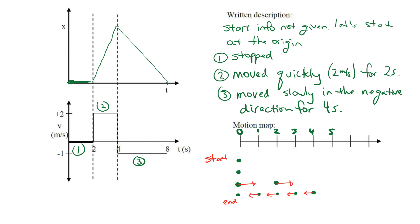Here's what I get. Starting at the origin — the first segment was stopped. Then moving quickly: two meters per second in this case, for two seconds because it goes from zero to two. Then the third segment moves slowly in the negative direction for four seconds — slowly because it's only minus one, not two — and it goes for four seconds because it goes from four to eight.